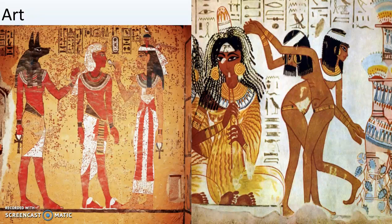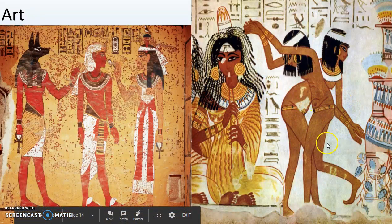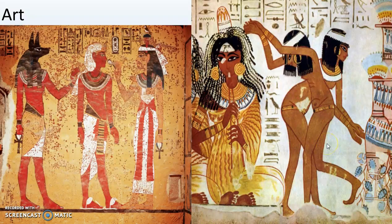How do we know what ancient Egyptians looked like? Because we have art of what they look like. How does this art survive? It's actually inside the pyramids, so it's been protected. The paint and the colors have been protected over thousands of years, which is really cool.